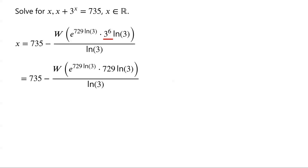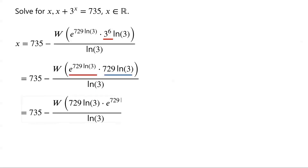Now exchanging the order, the numerator can be written as W of 729·ln(3) times e to the power of 729·ln(3).